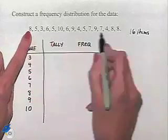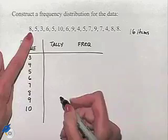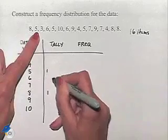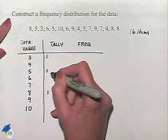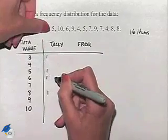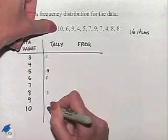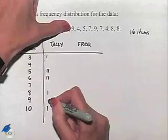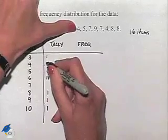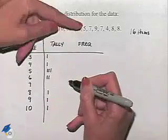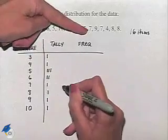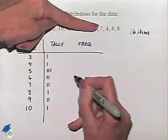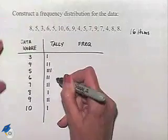So I'm going to run across the list, and we're going to tally as we go. So we have an 8, 5, 3, 6, 5, 10, 6, 9, 4, 5, 7, 9, 7, 4, and then 2 8s.